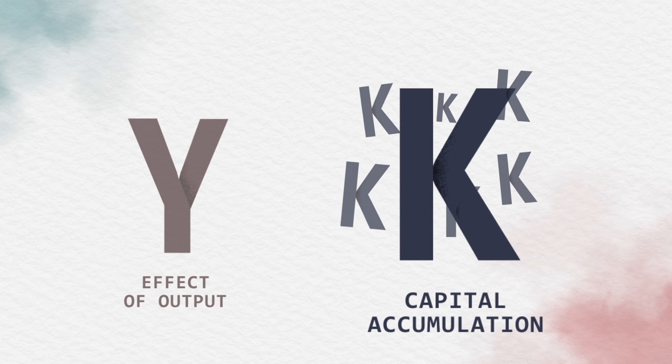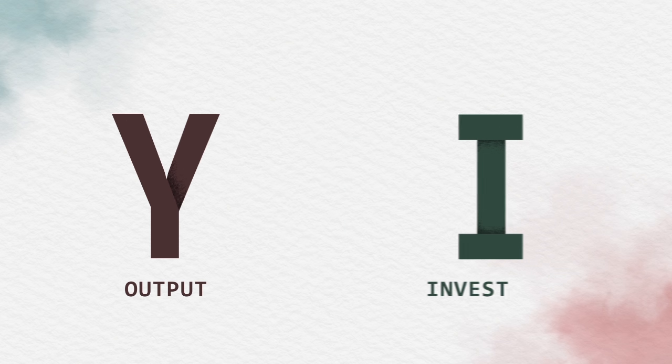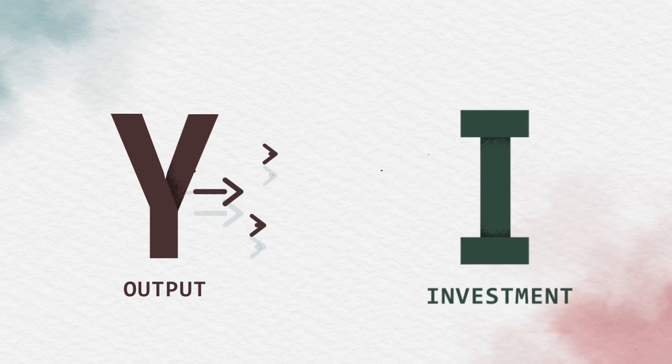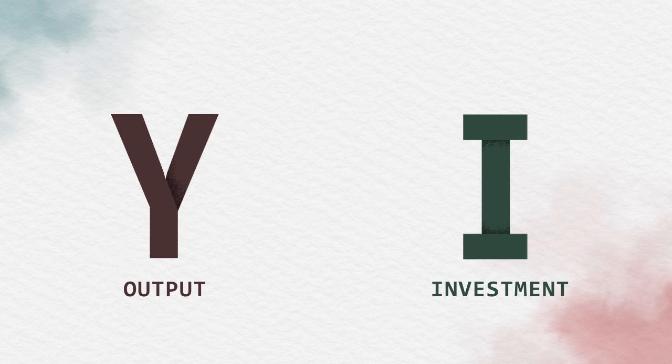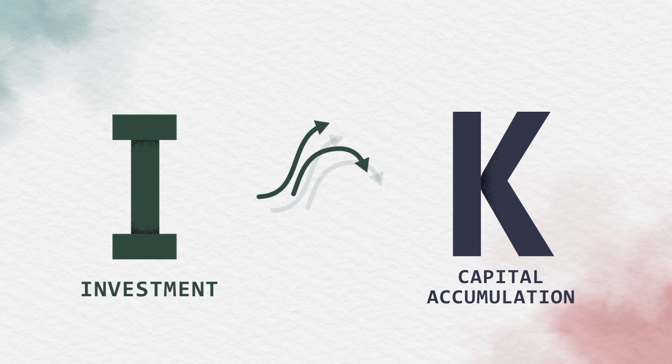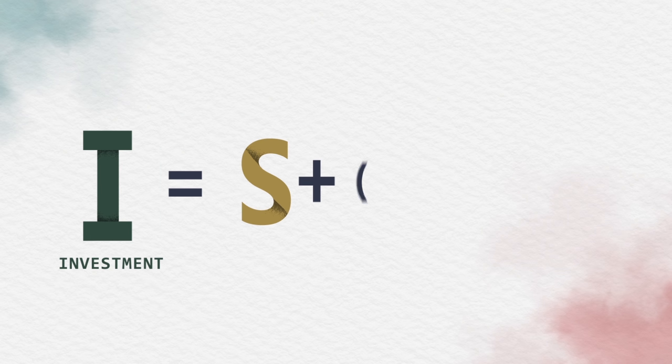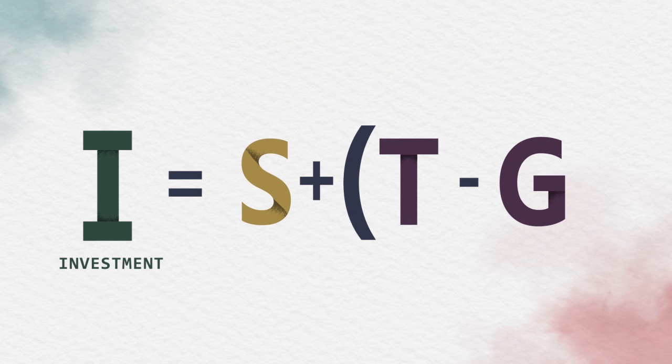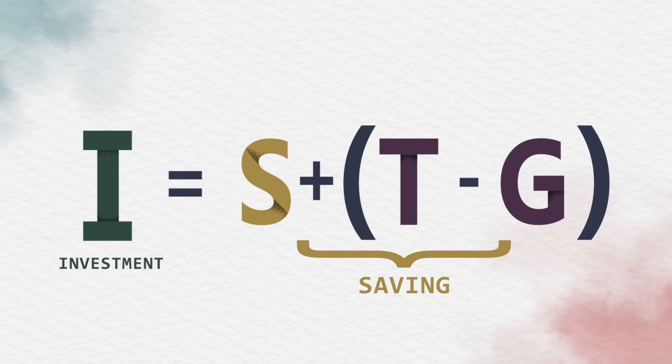This effect proceeds in two steps. The first step is the relationship between output and investment. The second step is investment and capital accumulation. The relationship between output and investment: if we assume that the economy is closed, that means investment is equal to savings.